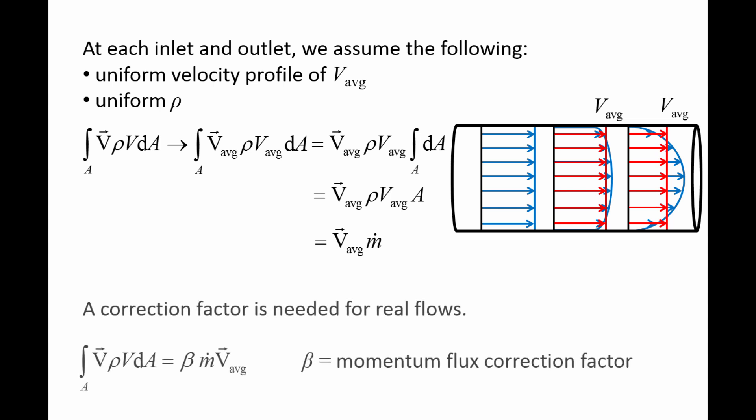However, if we had evaluated the integral using the actual velocity profile, we would find that the expression v_average times m-dot produces some error, requiring us to introduce a momentum flux correction factor beta. Beta is a measure of how much the momentum flux for the actual flow deviates from the momentum flux calculated using the uniform velocity profile assumption. For the parabolic laminar flow, the value of beta is 4/3. For the flatter turbulent flow, the value of beta is typically between 1.01 and 1.04. For the uniform flow, beta is exactly 1.